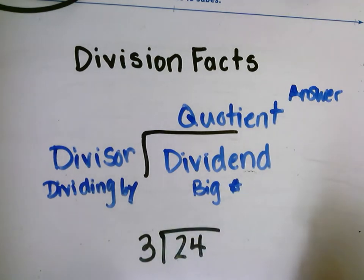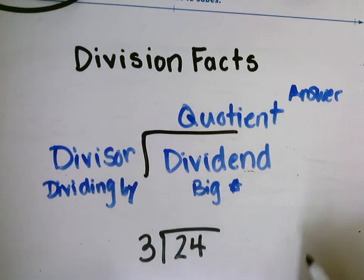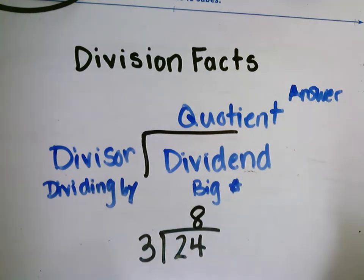I want to think, well what number multiplied by 3 is going to have a result of 24? Or if I had 24 things and I broke them into three groups how many groups would I be? But this is where we're going to use our multiplication facts to help us with division. I know that 3 times 8 is 24, so my answer is going to be 8.